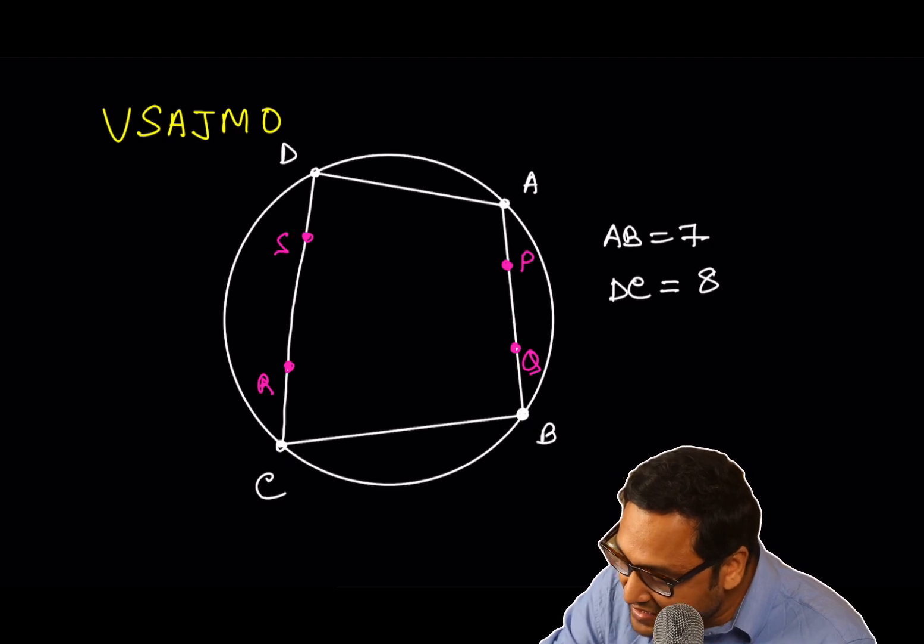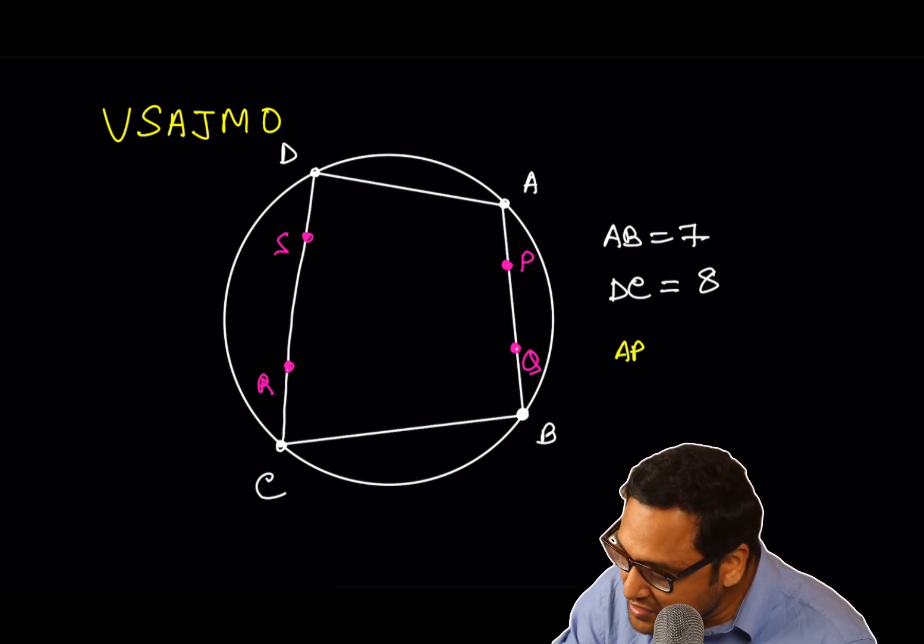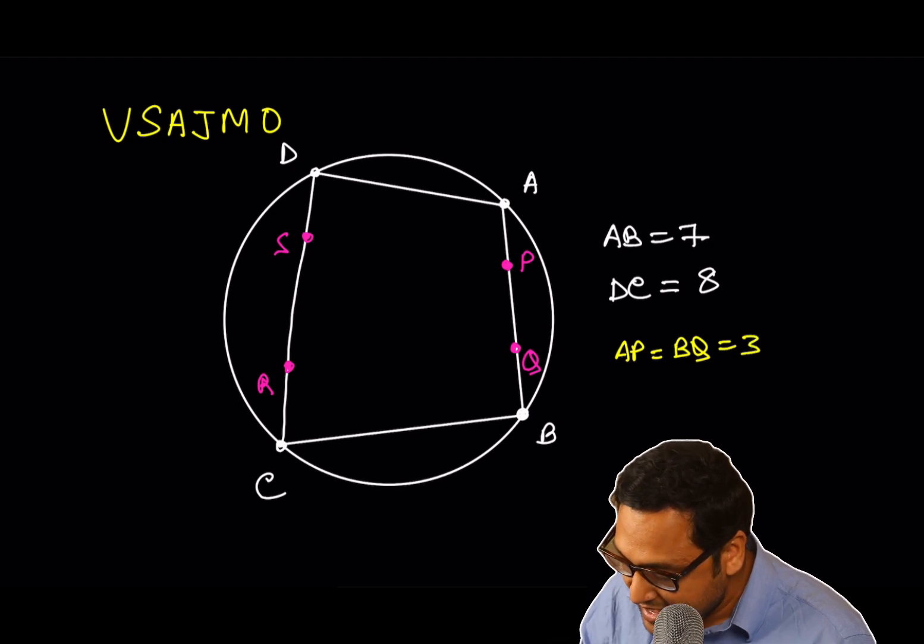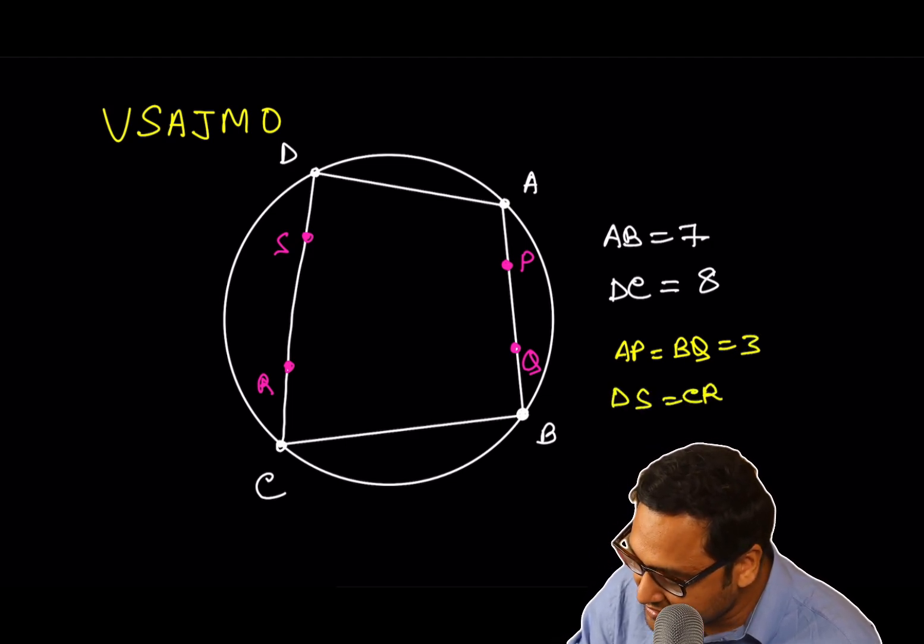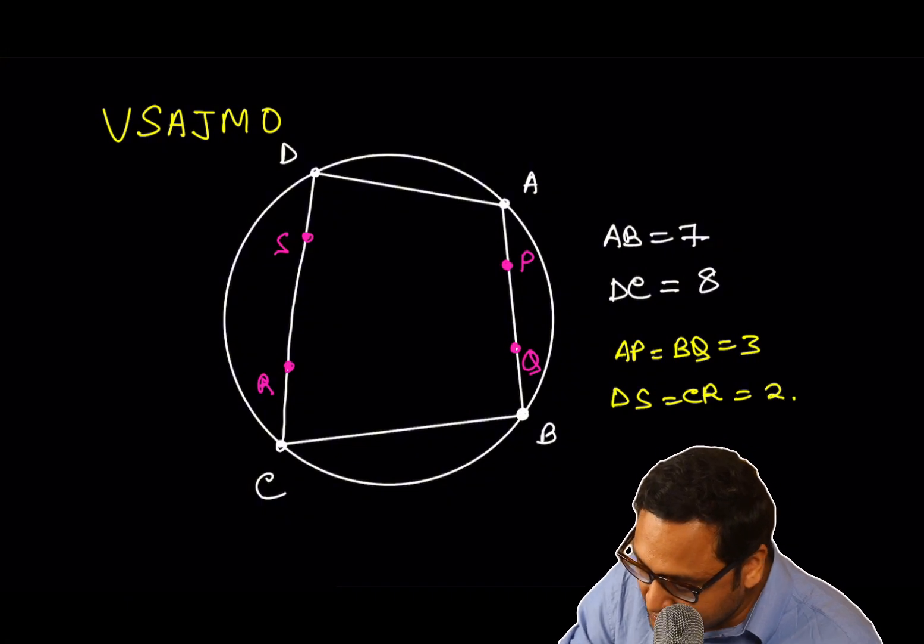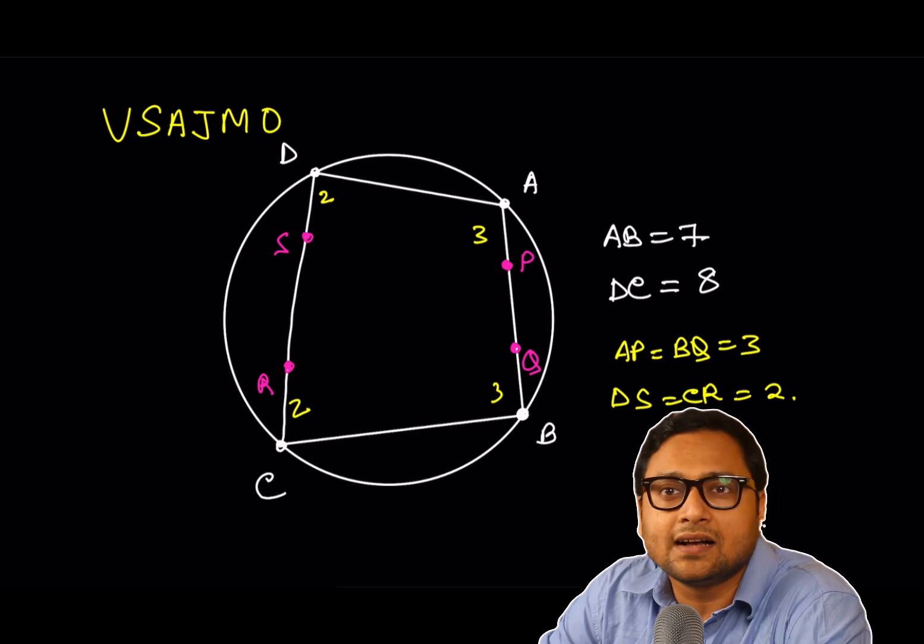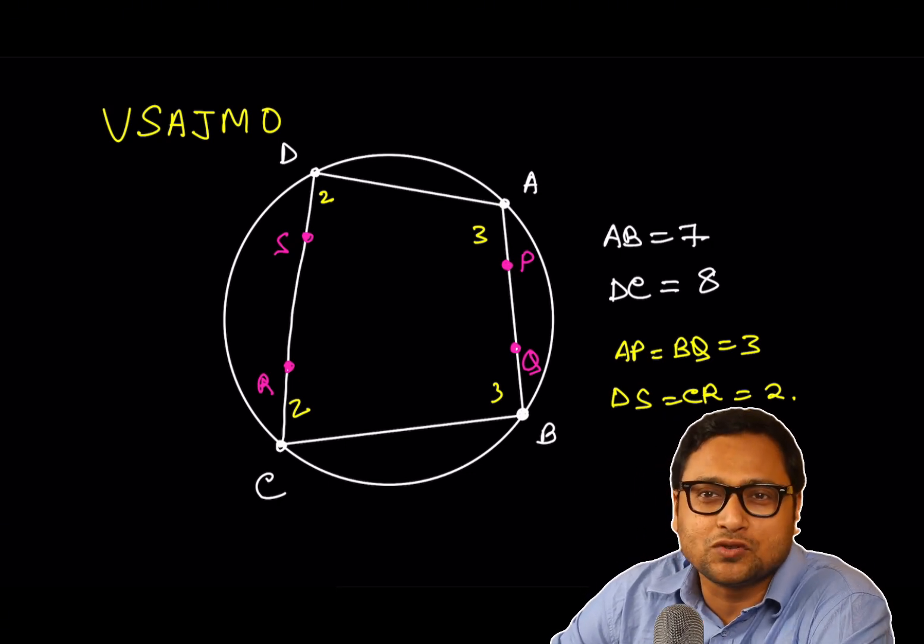Here, AP is given to be equal to BQ equals 3. And DS is equal to CR is equal to 2. So this is 2, this is 2. And this is 3, this is 3. Of course, the picture is not to scale.